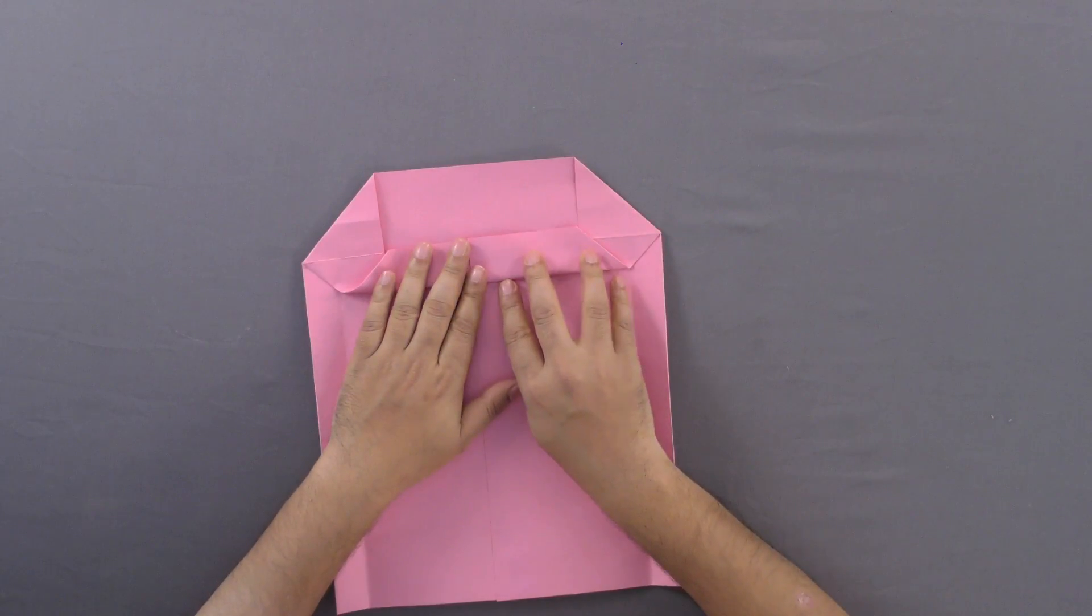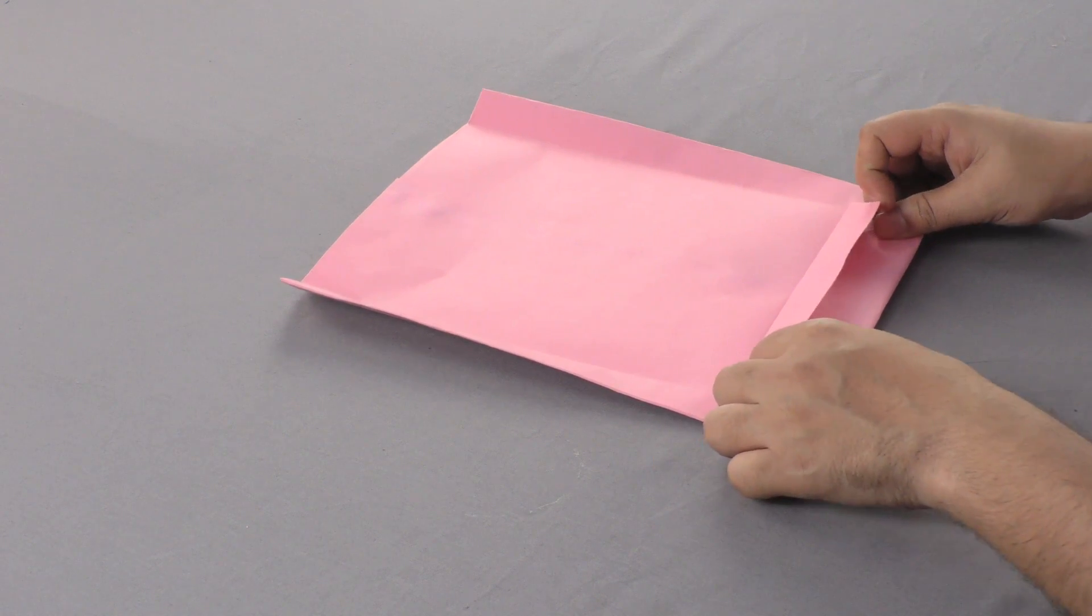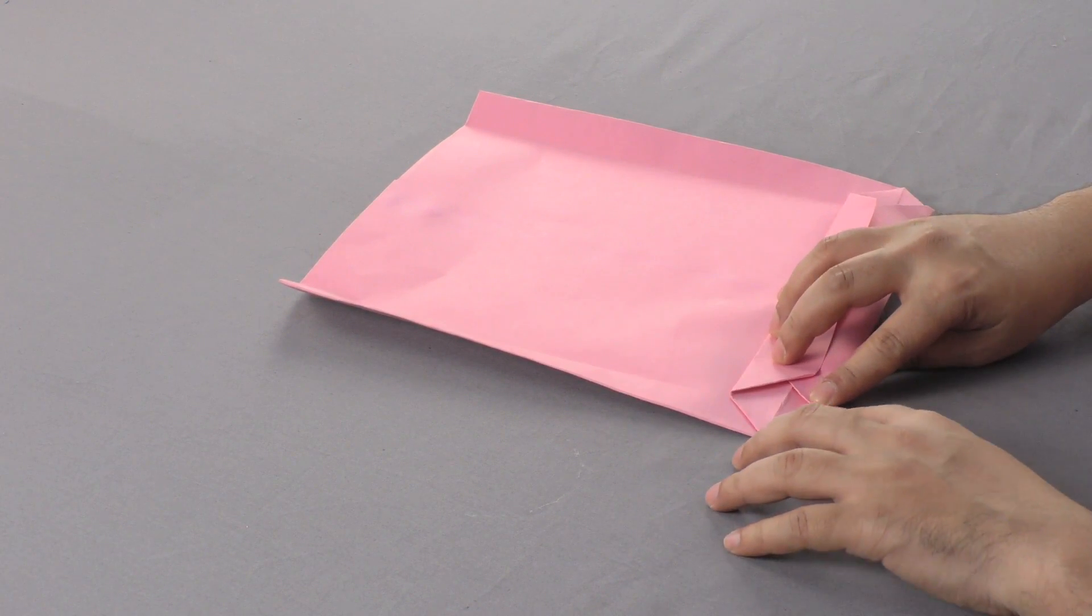Next, fold the open flaps inwards and paste an elongated strip of chart paper on the fold.